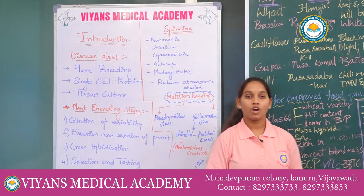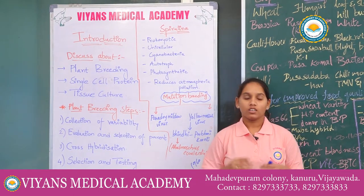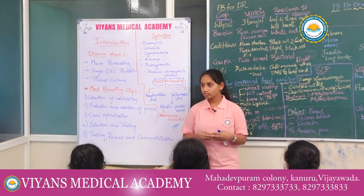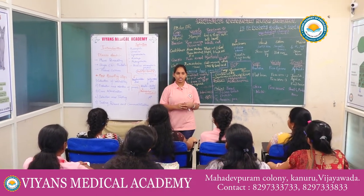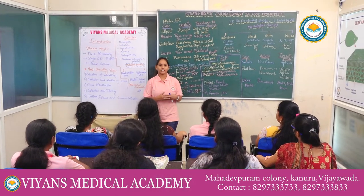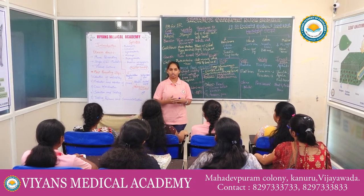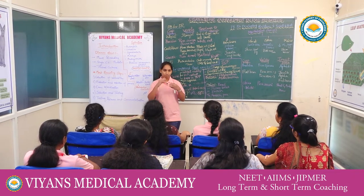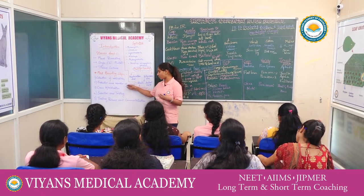First, collection of variability. What is germ plasm collection? Germ plasm collection involves different types of genes and plants. This step focuses on evaluating germ plasm and selecting plants with desirable characters. The success of plant breeding is critically dependent on this step of evaluation and selection of parents. It is an important step.